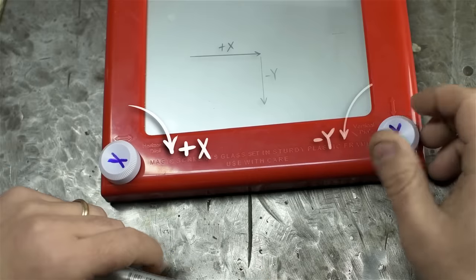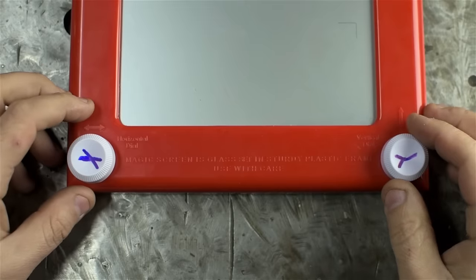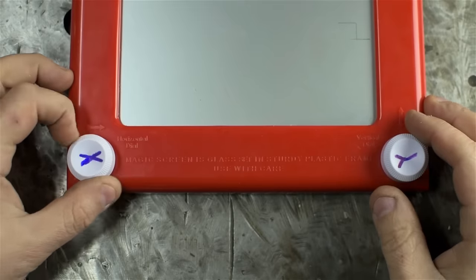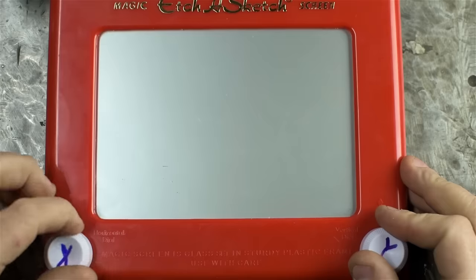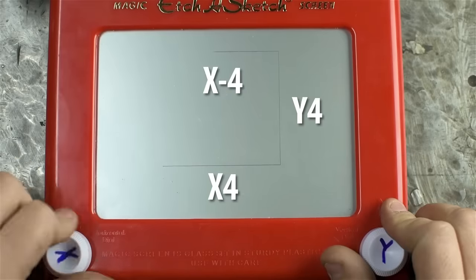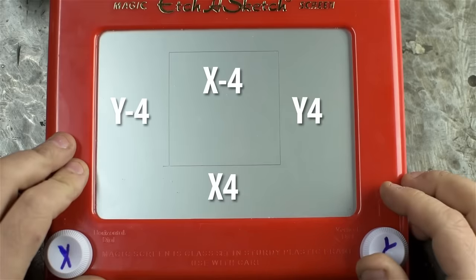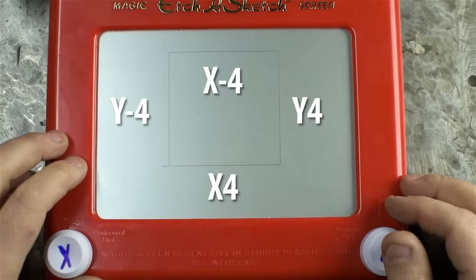For argument's sake, let's call the left-right direction X and the up-down direction we'll call Y. Now instead of saying left knob, right knob, we only need to say X and Y. And for direction, we'll use positive and negative. Positive X means turn the left knob clockwise. Negative Y means turn the right knob counterclockwise. I can now give you instructions that say X4, Y4, X-4, Y-4, and if I could have turned those with robotic precision, we should have ended up drawing a square that's four turns wide and four turns tall.